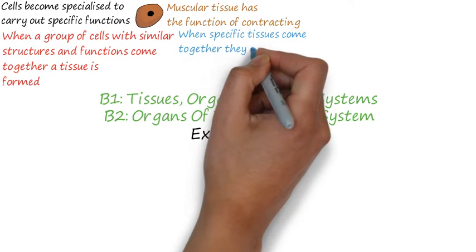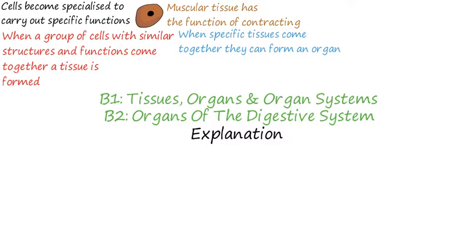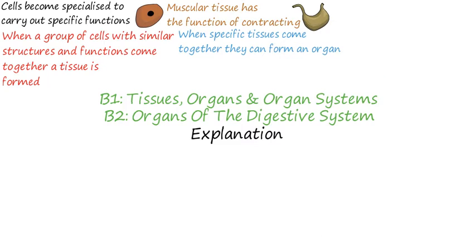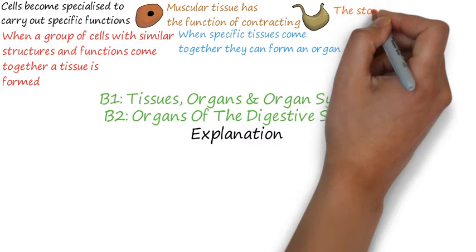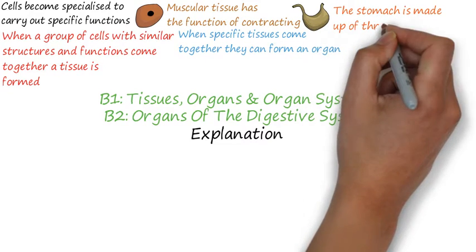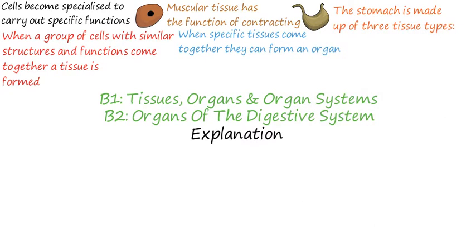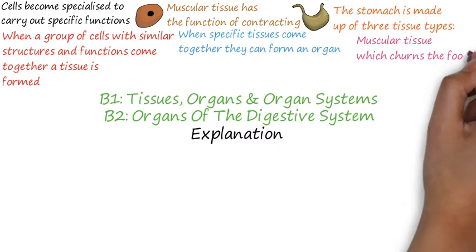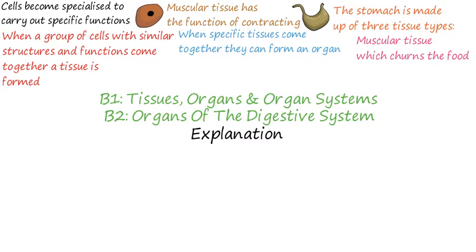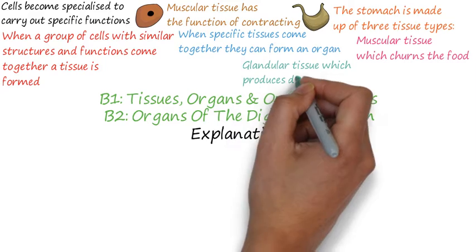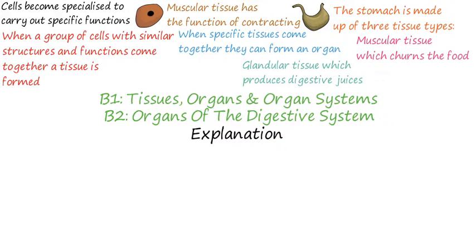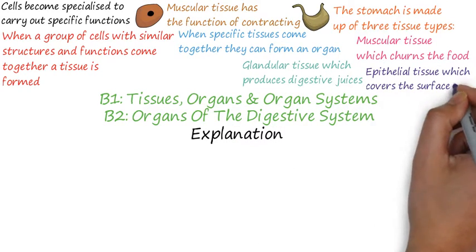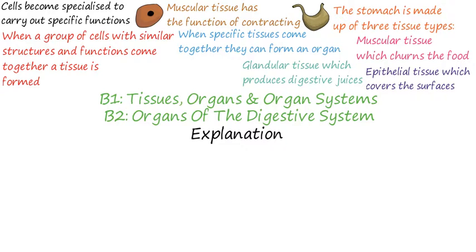When specific tissues come together they can form an organ. An organ is made up of more than one tissue type. A good example to use is the stomach. The stomach is made up of three tissue types: muscular tissue which churns the food, glandular tissue which produces digestive juices, and epithelial tissue which covers the inner and outer surfaces.